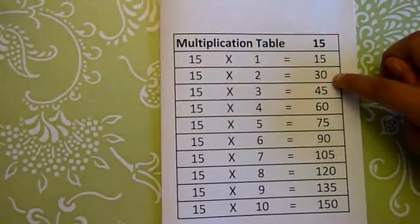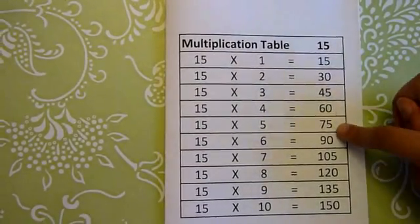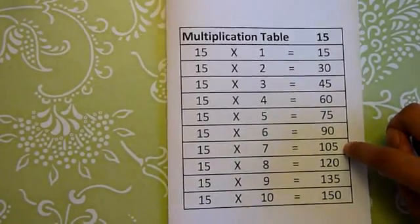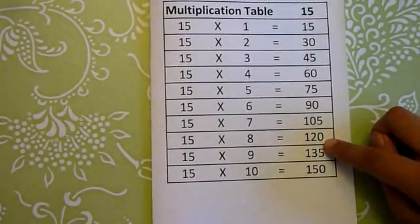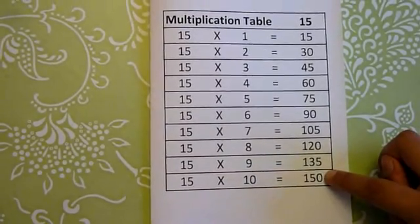15 1s are 15, 15 2s are 30, 15 3s are 45, 15 4s are 60, 15 5s are 75, 15 6s are 90, 15 7s are 105, 15 8s are 120, 15 9s are 135, and lastly, 15 10s are 150.